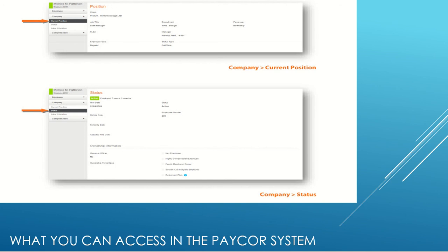If you scroll to the bottom, you will see Status. Status shows your employment status and type at your company, as well as the various employment dates. You will see your hire date and your rehire date if you previously left. You can also see whether you are active and your employee number. The ownership information at the bottom can be disregarded.